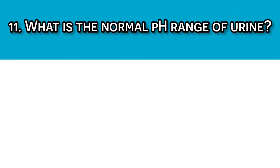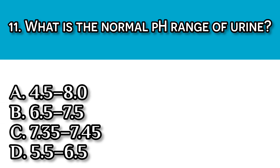Question number eleven: What is the normal pH range of urine? A. 4.5 to 8.0, B. 6.5 to 7.5, C. 7.35 to 7.45, and D. 5.5 to 6.5. Our answer here should be A, which is 4.5 to 8.0, because normal urine pH can range from acidic to slightly alkaline depending on the diet and health status of the individual.